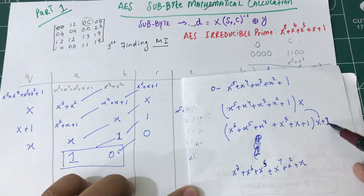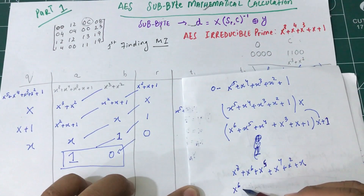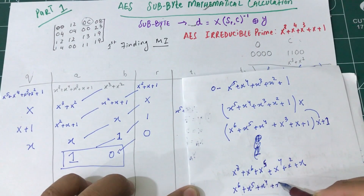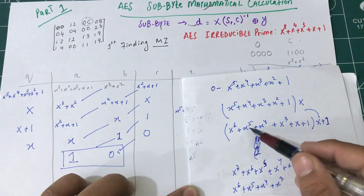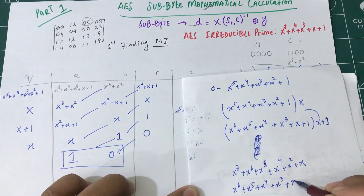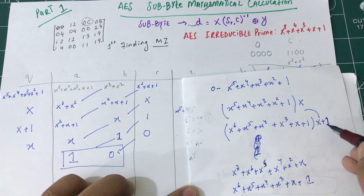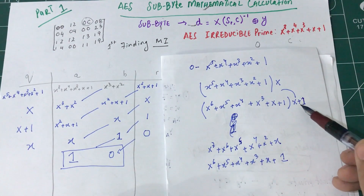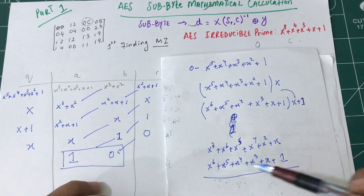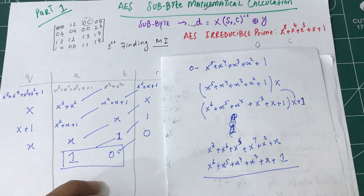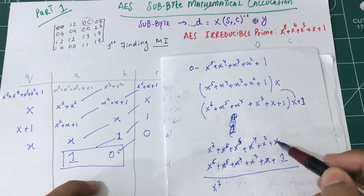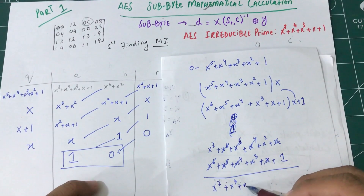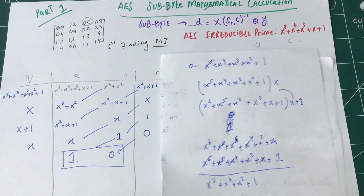I also have to distribute 1 across all terms, giving x^6 plus x^5 plus x^4 plus x^3 plus x plus 1. Now in modulo 2 arithmetic, whichever terms are the same I cross out, and whichever are different I keep. Crossing matching pairs, I'm left with x^7 plus x^3 plus x^2 plus 1.